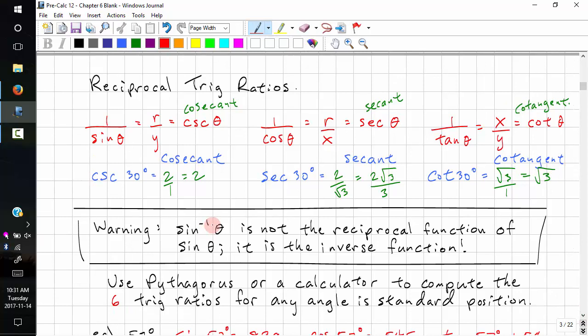Please note that this sine to the power of negative 1 theta is not the reciprocal function. It's inverse sine. The reciprocal is this, cosecant theta.